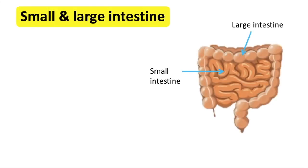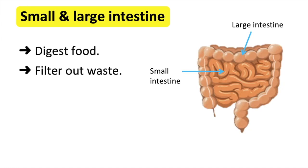Intestines are groups of tubes that digest food, filter out the body's waste, and absorb water. Food that's broken down from the stomach travels to the small intestine. This is where most of digestion and absorption of nutrients takes place.